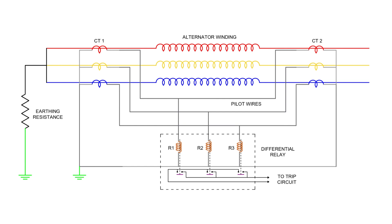Under normal conditions, the secondary currents cancel each other out, so no current flows through the relay coils. But when a fault happens, this balance is disturbed. The difference in current flows through the relay coils, which then activate the tripping mechanism to isolate the alternator.